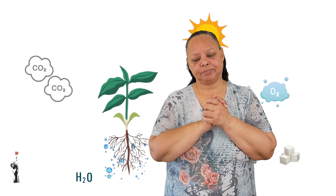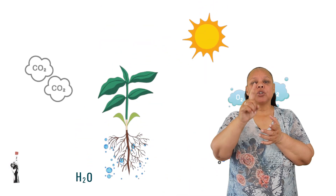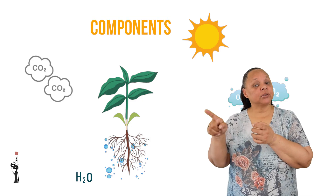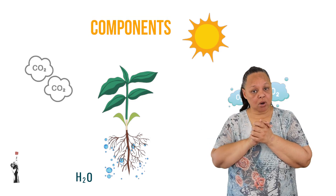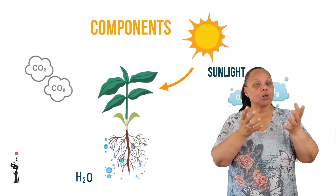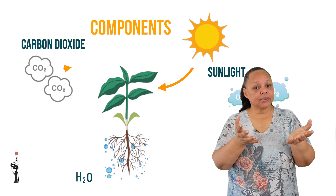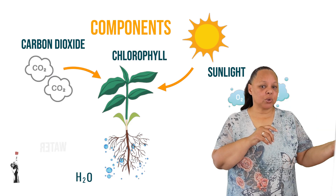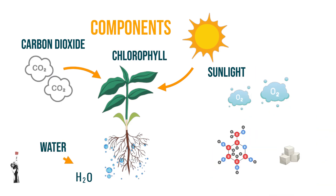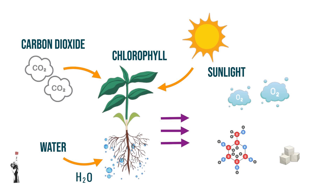Let's backtrack and summarize. The four components needed for photosynthesis are sunlight, carbon dioxide, chlorophyll, and water. During this chemical reaction, these compounds are turned into new compounds: glucose and oxygen.